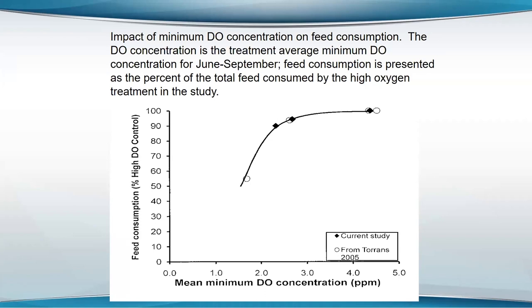The shrimp pond probably has a similar oxygen requirement. Most warm water species should be fine above three milligrams per liter, while cold water species are going to have to have full oxygen — probably not going below five milligrams per liter.